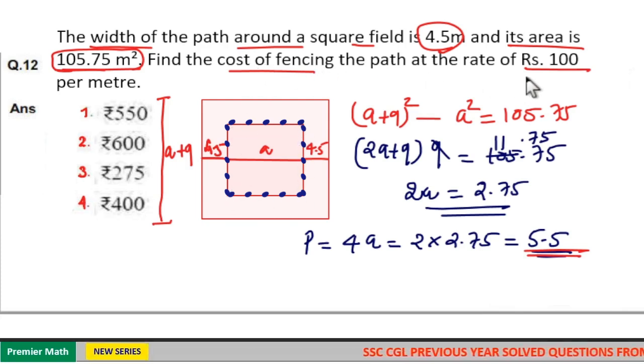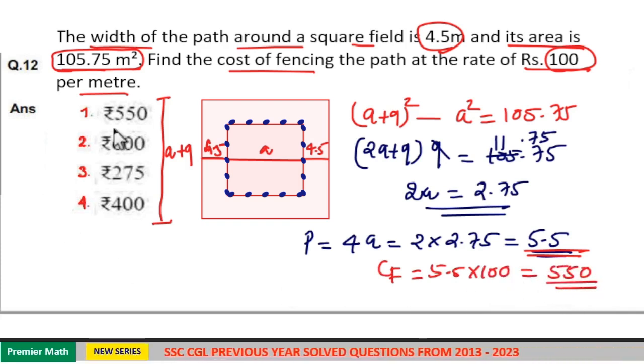So cost of fencing is 100 per meter. So total 5.5 meters. So cost of fencing is equal to 5.5 into 100, which is equal to 550. So option 1 is your answer.